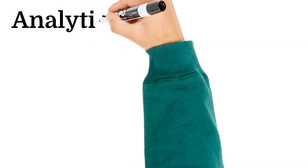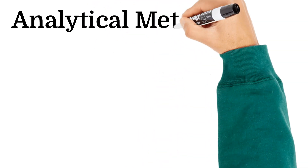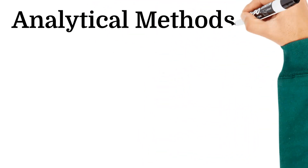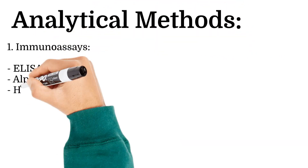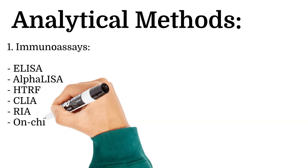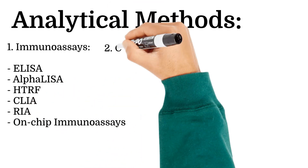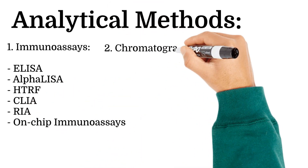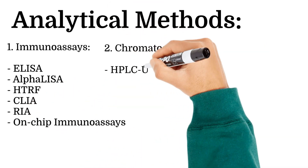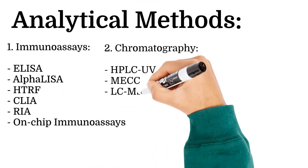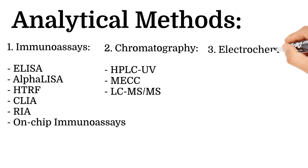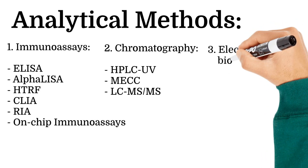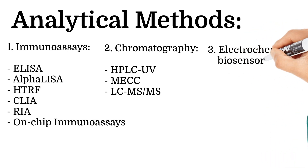The analytical methods for determining insulin concentration can be divided into three categories: immunoassays, chromatography methods in conjunction with mass spectrometry, and electrochemical biosensor methods.